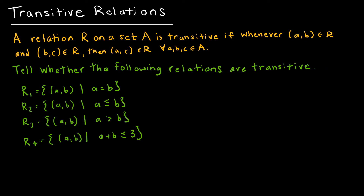The last property is the transitive property. A relation is transitive if whenever (A, B) is an element of R and (B, C) is an element of R, then (A, C) is an element of R for all values. For R1: if (1, 1) is in the relation, and then (1, 1) is also in the relation, that implies (1, 1) is in the relation. That is true, so R1 is transitive.